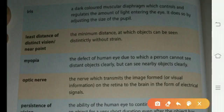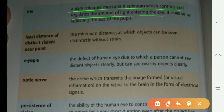The next keyword is Iris: a dark colored muscular diaphragm which controls and regulates the amount of light entering the eye. It does so by adjusting the size of the pupil.